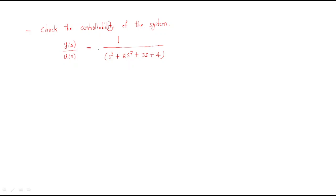We will discuss one problem here: check the controllability of the system. Controllability is related to input — keep that in mind. Observability is related to output. By using that, we can use the formula.